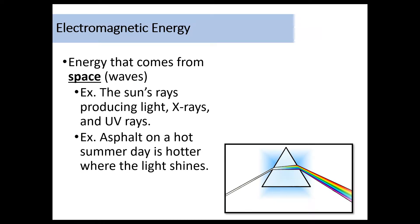Electromagnetic energy. This one might be a new concept for you, but basically this is energy that comes from space in the form of waves. So if you've ever heard of the electromagnetic spectrum, this is what we're talking about. So an example would be the sun's rays producing light. And then x-rays, UV rays. If you've ever heard of those things, those are all examples of electromagnetic energy via the electromagnetic spectrum. Asphalt on a hot summer day is hotter where the light shines because the sunlight would be an example of radiated electromagnetic energy.